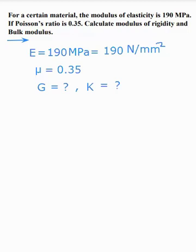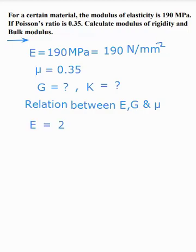So first of all, relation between E, G and mu. So write down, relation between E, G and mu. So write down, E is equal to 2G in bracket 1 plus mu.